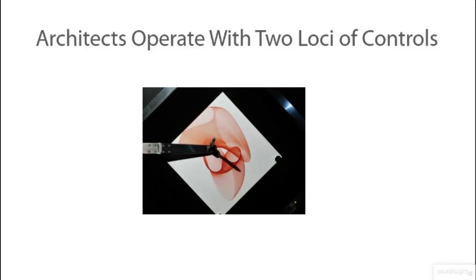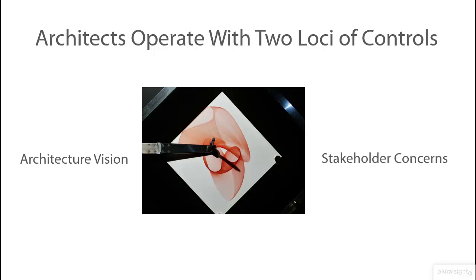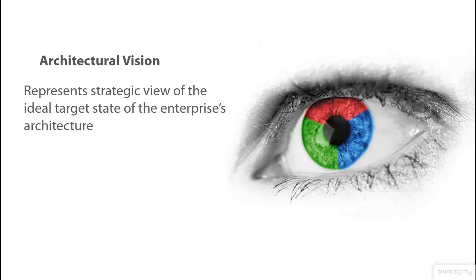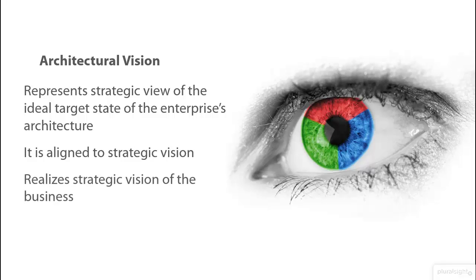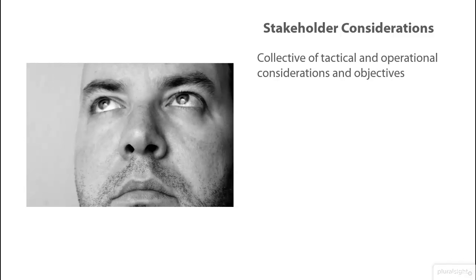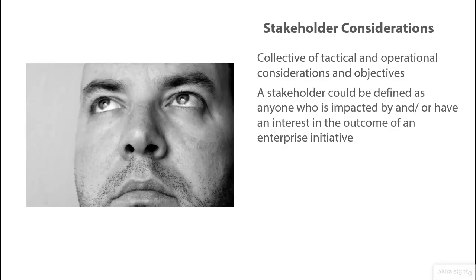Broadly speaking, architects typically work with two primary loci of controls to guide their work: the architecture vision and the stakeholder concerns. Architecture vision represents a strategic view of the ideal target state of enterprise architecture, aligned to and enabling the strategic vision of the business. Stakeholder concerns refer to the collective of tactical and operational considerations, objectives, apprehensions, and pain points held by key stakeholders, and their perceptions of improvements needed to transition the system from the current state to a desired target state. A stakeholder can be defined as anyone who is impacted by and/or has an interest in the outcome of an enterprise initiative.